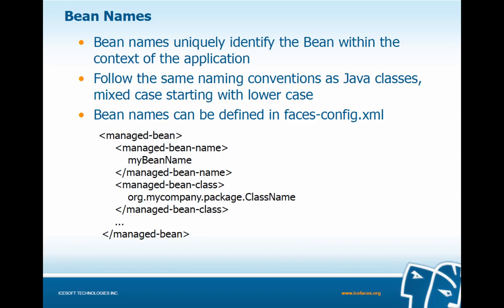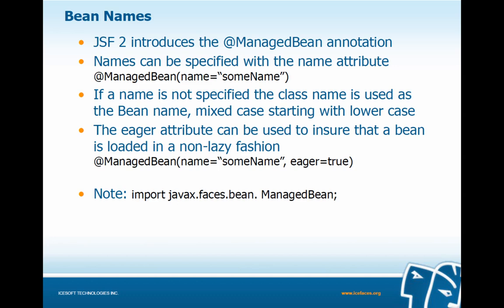Bean names follow the same naming conventions as Java classes — mixed case starting with lowercase. Bean names can be defined in the faces-config file with opening and closing ManagedBean tags; nested within, we have the ManagedBean name tag. JSF 2 introduces the @ManagedBean annotation, which allows us to clean up our faces-config files and put all configuration into the actual Managed Bean classes. Names can be specified with the name attribute. If a name is not specified, the class name is used as the bean name. The eager attribute can be used to ensure a bean is loaded in a non-lazy fashion, but normally we'll have eager set to false and allow JSF 2 to create beans in a lazy-loaded fashion on demand.